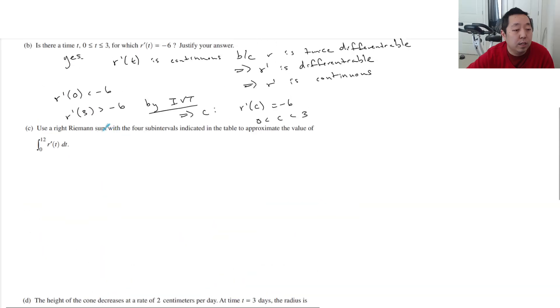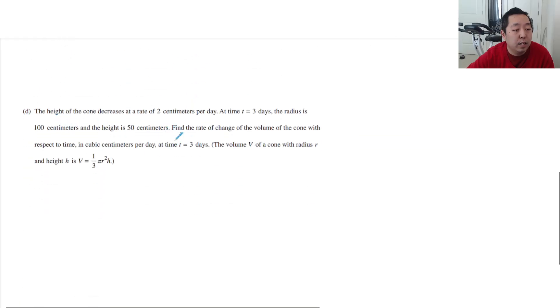The height of the cone decreases at a rate, so dh/dt is decreasing at a rate. So it's -2 centimeters per day. At time t = 3 days, the radius is 100 centimeters and the height is 50 centimeters. Find the rate of change of the volume of the cone with respect to time. They give you V = (1/3)πr²h. They want to find dV/dt.